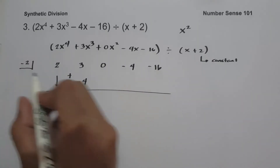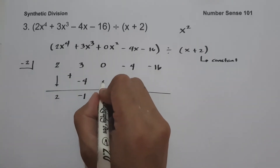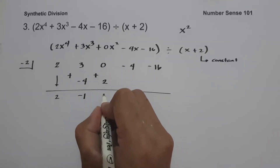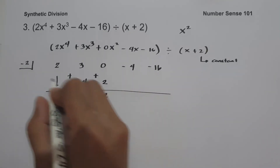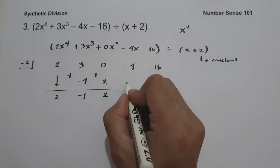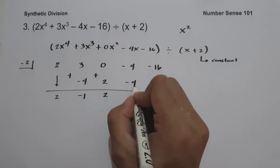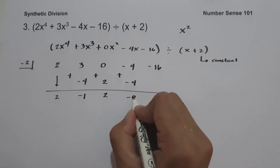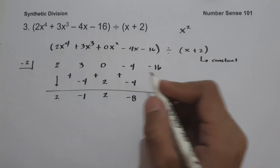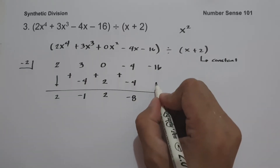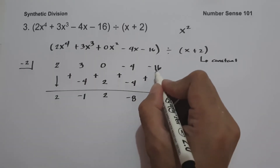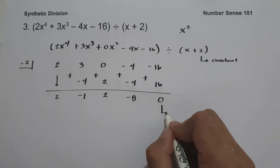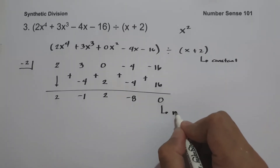Negative 1 multiplied by negative 2 is positive 2. Zero plus 2 is 2. Two multiplied by negative 2 is negative 4. Negative 4 plus negative 4 is negative 8. Negative 8 multiplied by negative 2 is positive 16, and negative 16 plus 16 is 0. So this will be our remainder.